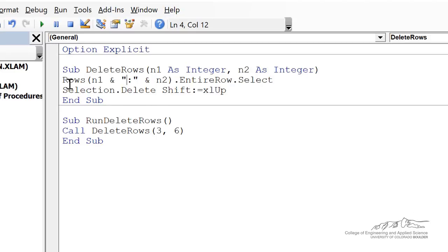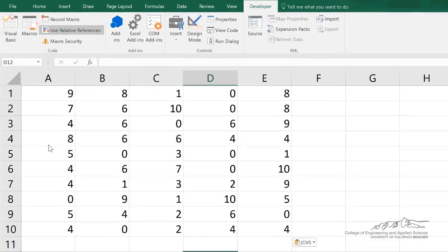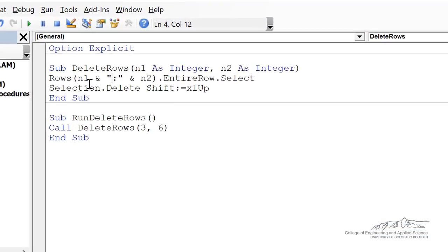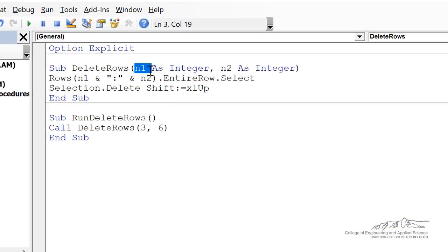I've also got a more complex example here of a sub that has arguments. What this is going to do is it's going to delete rows on a spreadsheet. I could say I want to delete rows 4 through 7. The sub needs to know where to start. It's going to start at the 4th row. It's going to finish at the 7th row.